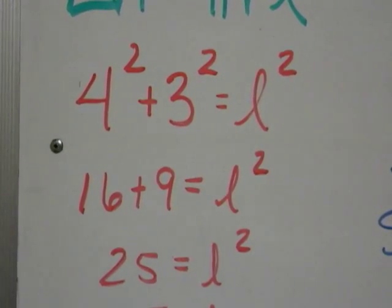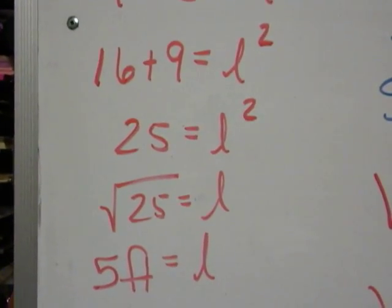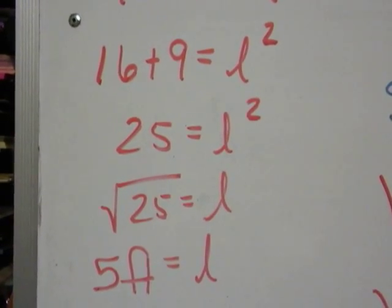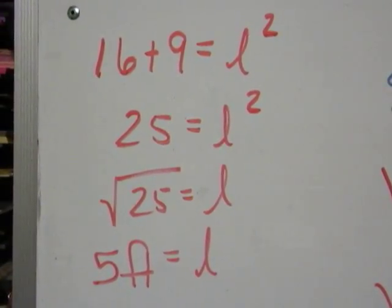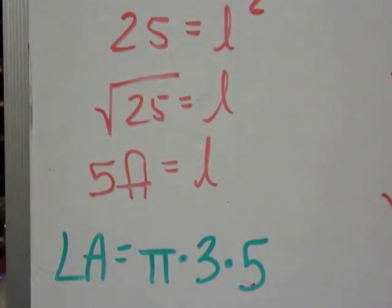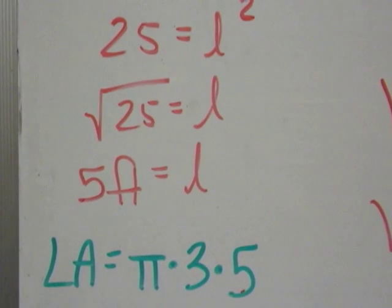I get rid of the square by doing the square root. The square root of 25 is 5, so the slant height for this particular cone is 5 feet. Now I have the information I need to plug in for lateral area. The lateral area will now be pi times 3 times 5.